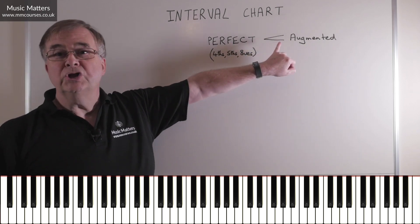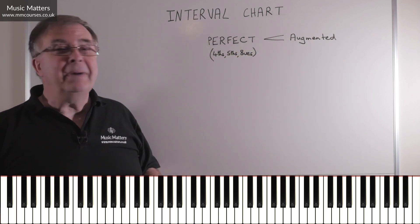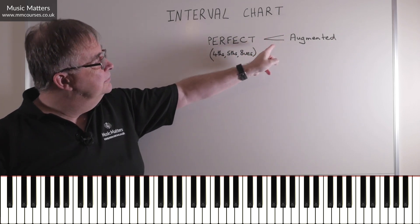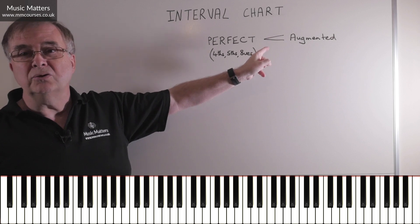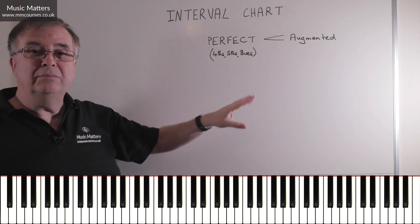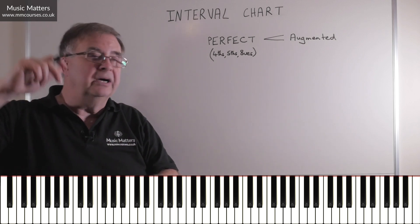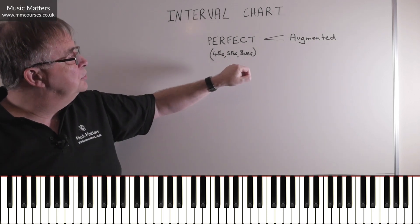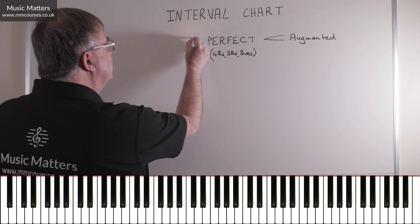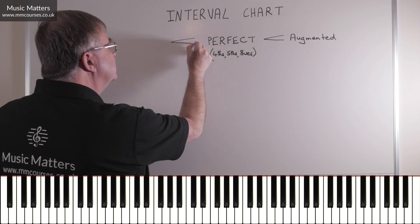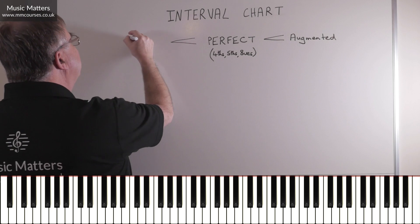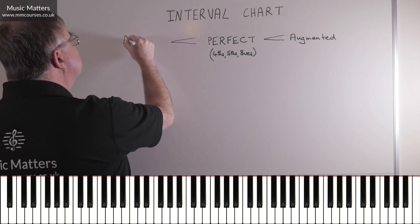This is not a crescendo sign — it's a mathematical sign, lesser than and greater than. Each one of these represents a semitone's worth. So if an interval is a semitone bigger — in other words, the notes are a semitone further apart than a perfect interval should be — then it must be an augmented interval. If a perfect interval is a semitone smaller than it should be, then it becomes diminished.